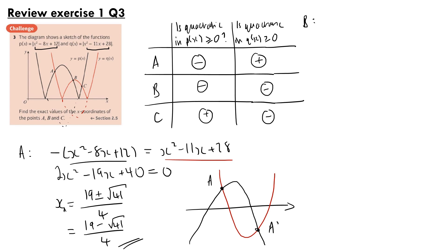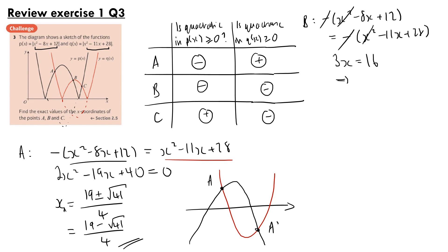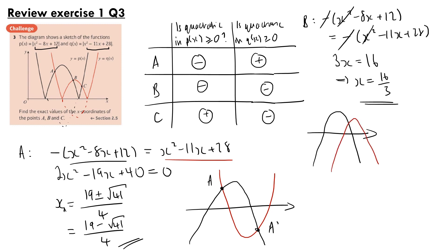For point B, both curves are negative, so we solve: negative (x squared minus 8x plus 12) equals negative (x squared minus 11x plus 28). Dividing through by minus 1 and cancelling the x-squared terms leaves 3x equals 16, so x equals 16 thirds. There is only one solution here, as can be seen by drawing the two negative curves, which gives only one intersection point.